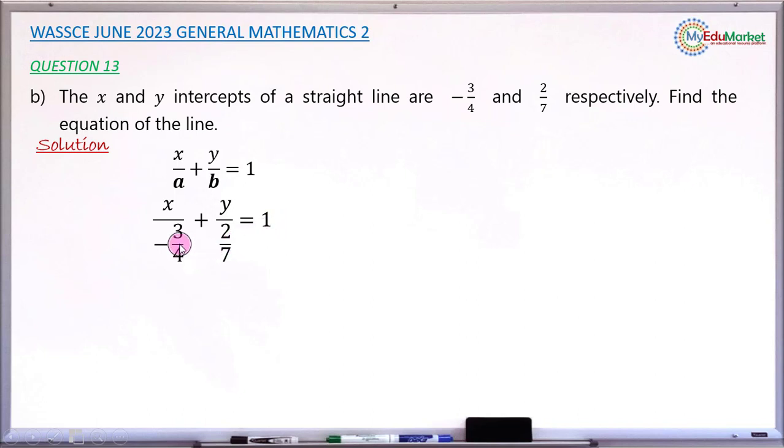So I will now simplify this. I am dividing x by this negative 3 over 4, which is a fraction, and I am dividing y also by this fraction 2 over 7. So division by a fraction is the same thing as multiplying by the reciprocal. So x divided by minus 3 over 4 gives you minus 4x over 3, that is x multiplied by minus 4 over 3, the reciprocal of 3 over 4. Similarly, y multiplied by 7 over 2 gives you 7y over 2 equals 1.